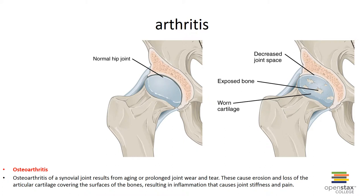Osteoarthritis, also known as degenerative arthritis or degenerative joint disease, generally affects individuals age 60 or older. It can result from the cumulative effects of wear and tear on the joint surfaces or from genetic factors affecting collagen formation. In the United States, about 25% of women and 15% of men over the age of 60 show signs of this condition.